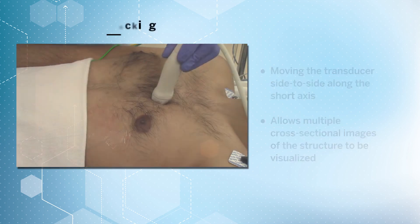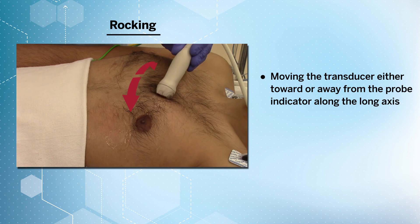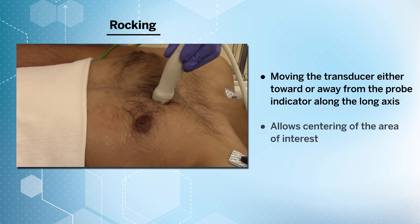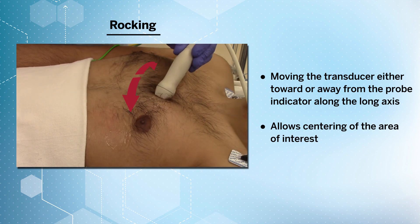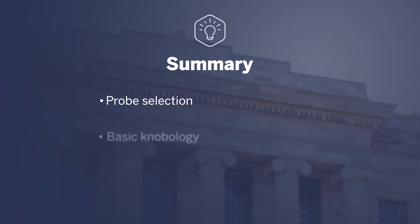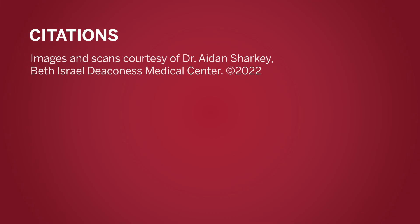Finally, rocking the probe involves moving the probe either towards or away from the probe indicator along the long axis. This motion allows the user to center the area of interest. That concludes our first lecture on basic cardiac point-of-care ultrasound, in which we discussed probe selection, basic knobology, and basic probe manipulations. Thank you for watching, and I hope you found this topic helpful.